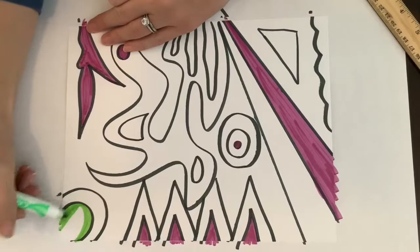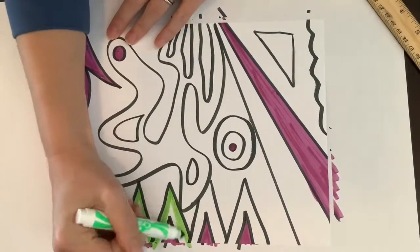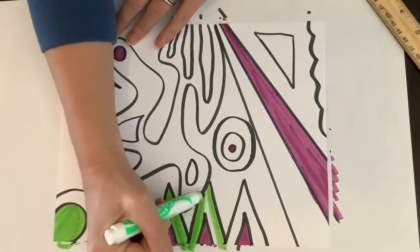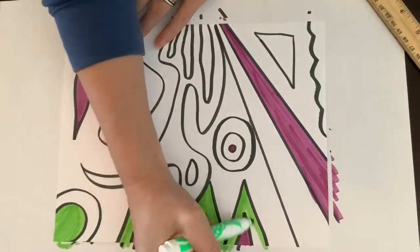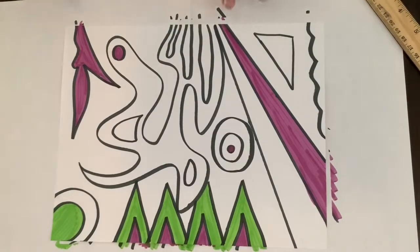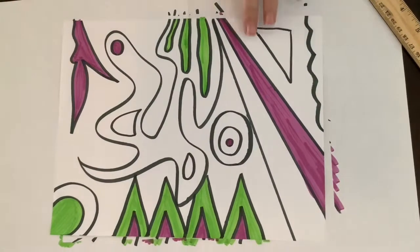Then I continue drawing line after line after line to fill in the rest of the white space. I'm not coloring in the traditional sense of coloring. The way that I am coloring is by drawing lines. I'm filling up all the white spaces by putting one line directly next to another.